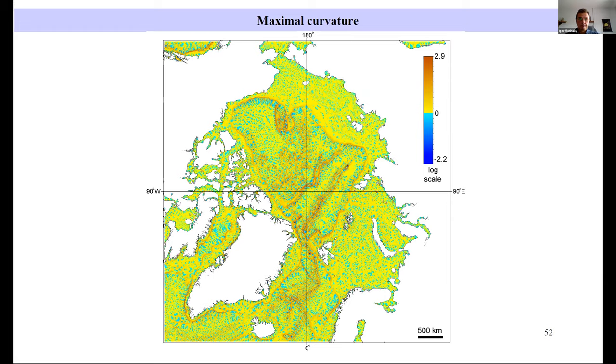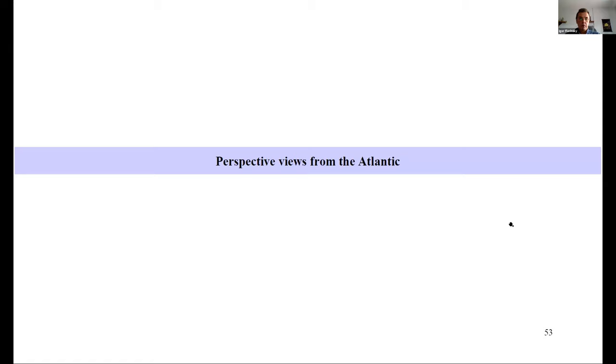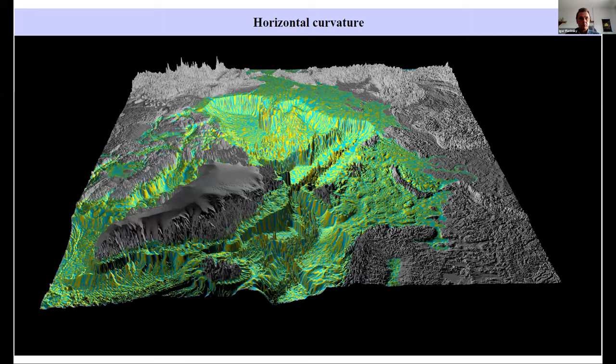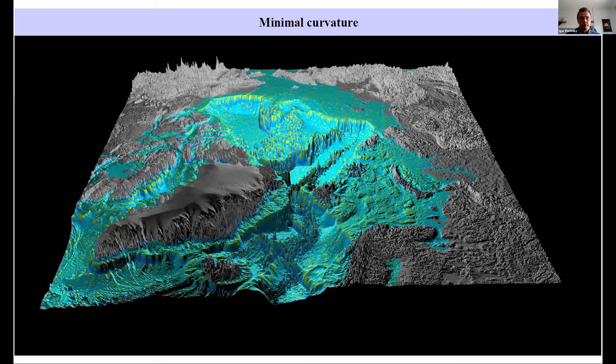Now there will be a set of 3D models with four perspective views: from Atlantic, Eurasia, Pacific and North America. First from the Atlantic. Depths. I will not comment these 3D models because it would be better just to see them. Horizontal curvature. Here we used a vertical exaggeration scale of 80. Vertical curvature. Minimal curvature. And maximum curvature.